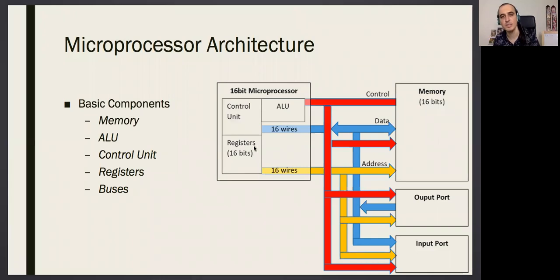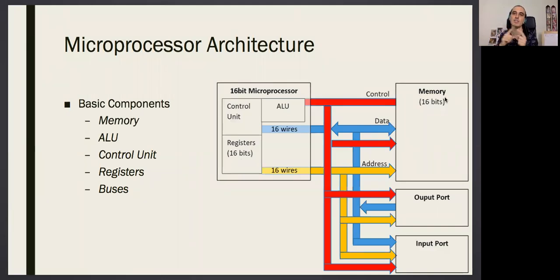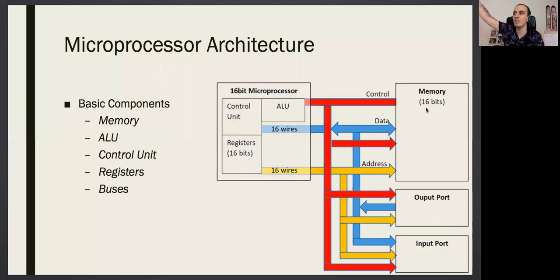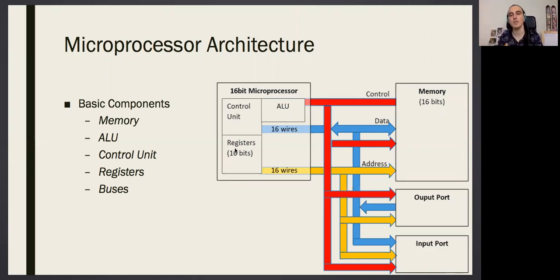We have an analogy here. The hard disk as you know it maps to something called memory in the microprocessor, so the names are interchanged — don't get confused. When I say memory in a microprocessor, it is actually like the hard disk. When I say registers, it is like the RAM memory of a desktop computer.